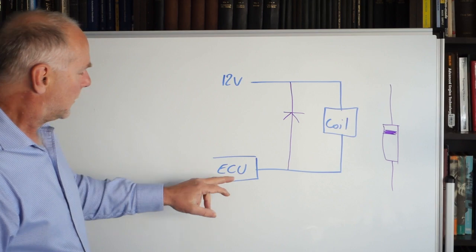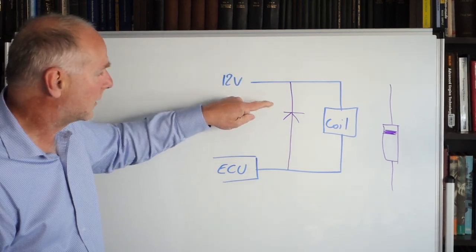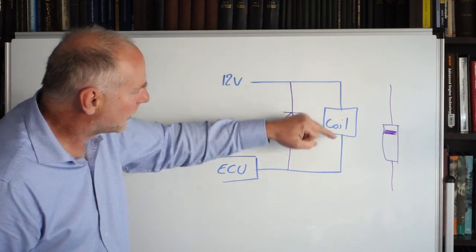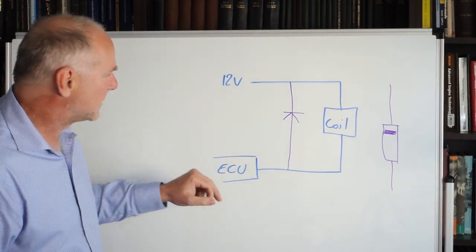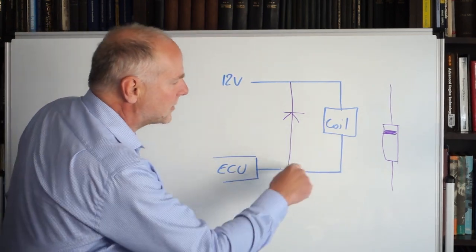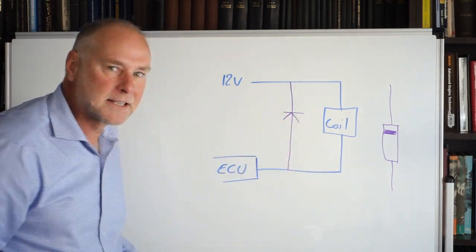Let's look what happens. ECU grounds, current can't flow that way because the diode's aimed the other way, so it can go through the coil, switch on. When you switch off the ECU, that voltage spike can harmlessly go around that circuit, dissipating itself.